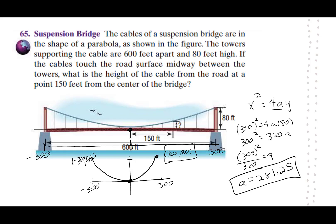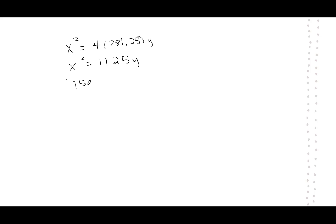Back to the question. What is the height of the cable from the road at a point 150 feet from the center? So I know the x, I'm looking for the y. So I want 150 squared equals 1125y. So 150 squared divided by 1125, that comes out really nice. It's just 20. So for all that work, you're only entering in one number, which is 20.